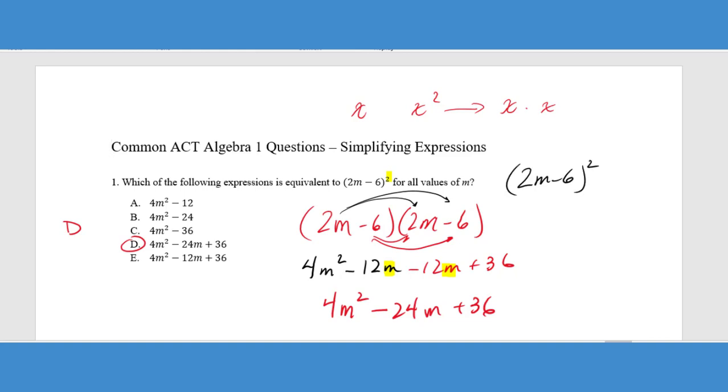When you have 2M minus 6 squared, that does not equal, you cannot distribute that 2. So that does not equal 4M squared minus 36. It doesn't equal 4M squared plus 36. So keep in mind, you cannot do that. That is a big no.